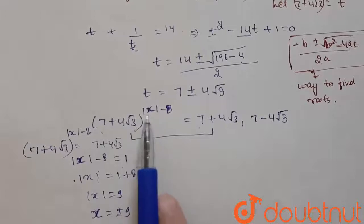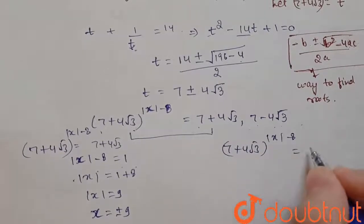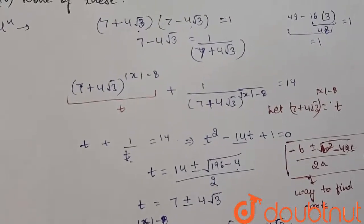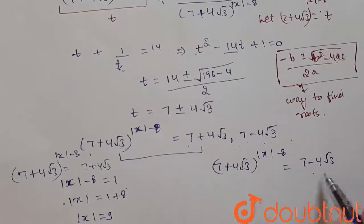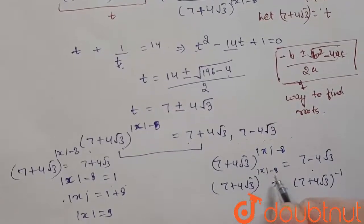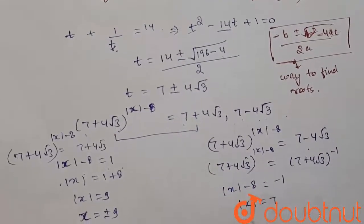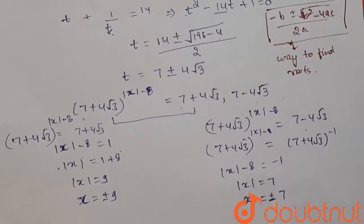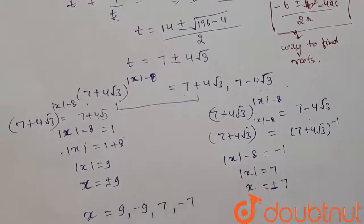For t = 7 − 4√3: (7 + 4√3)^|x−8| = 7 − 4√3. Since 7 − 4√3 = (7 + 4√3)^(−1), we get |x − 8| = −1, so |x| = 7. Therefore x = +7 or x = −7. So from both cases we have four values of x: 9, −9, 7, and −7.